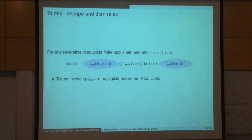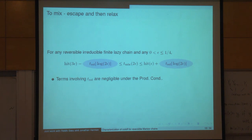Under the product condition, the relaxation time is negligible, so this says t_mix(ε) is equivalent up to a negligible error to hitting times. If hit(ε) doesn't depend much on ε, then t_mix doesn't depend much on ε. This controls the behavior when ε is near zero; for cutoff we also need to understand the behavior when total variation distance is near one.